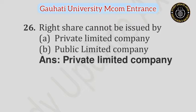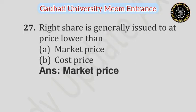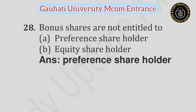Question number 26: Right share cannot be issued by — Option A: Private Limited Company, Option B: Public Limited Company. Answer is Private Limited Company. Question number 27: Right share is generally issued at a price lower than — Option A: Market price, Option B: Cost price. Answer is Market price. Question number 28: Bonus shares are not entitled to — Option A: Preference Shareholder, Option B: Equity Shareholder. Answer is Preference Shareholder.